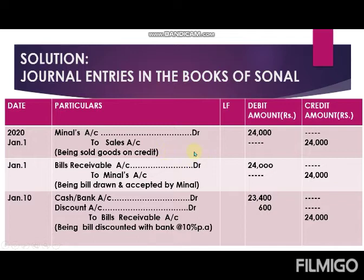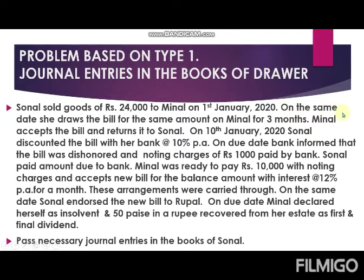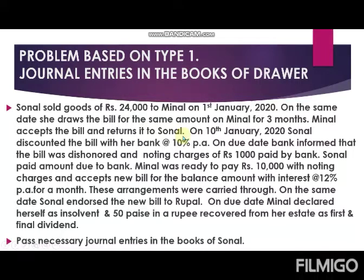Now read the second line: on the same date, i.e., January 1st, she — meaning Sonal — draws the bill for the same amount, 24,000, on Minal. From this line, you can understand that Sonal is the drawer and Minal is the drawee. Sonal draws the bill on Minal for three months. Minal accepts the bill and returns it to Sonal.